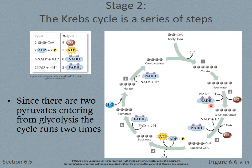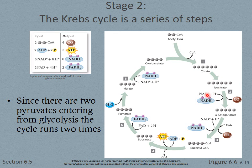Throughout the Krebs cycle, electrons are being released from the acetyl-CoA and accepted by NAD+ along with hydrogen to create NADHs. Another NADH, an ATP, a FADH2, and then another NADH are produced. You see three NADHs, one FADH2, and one ATP per cycle turn — but the cycle happens twice for each glucose (once per acetyl-CoA), which is why those numbers are doubled in the left-hand table.